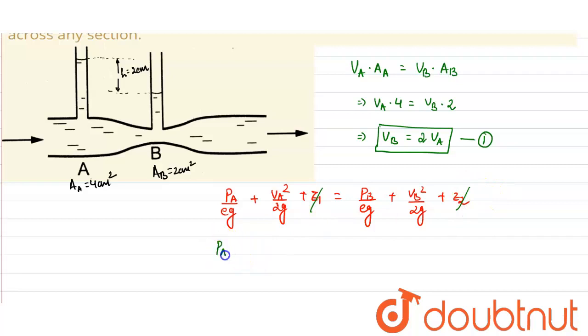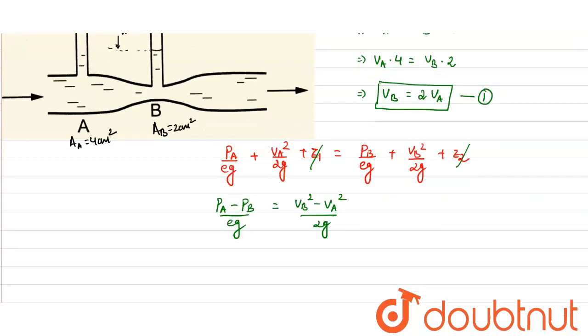So, from here, what we get is (PA - PB)/(ρg) = (VB² - VA²)/(2g). Now, we know the relation between VA and VB, so put it over here from equation number 1. So what we get is 3VA²/(2g).